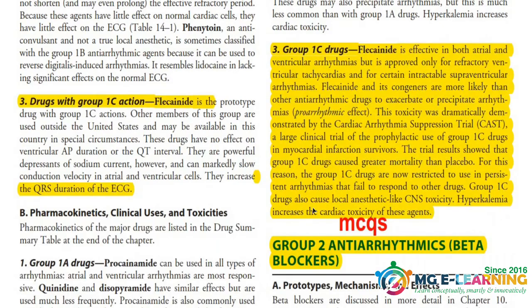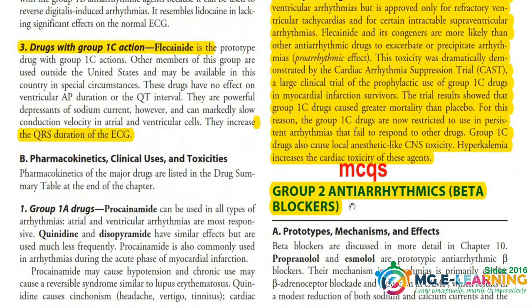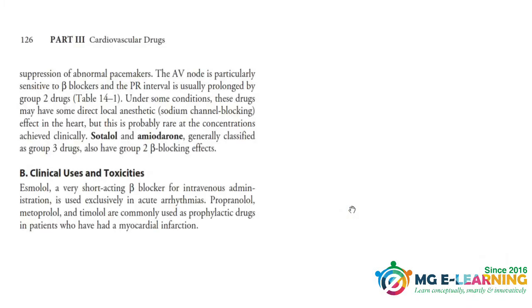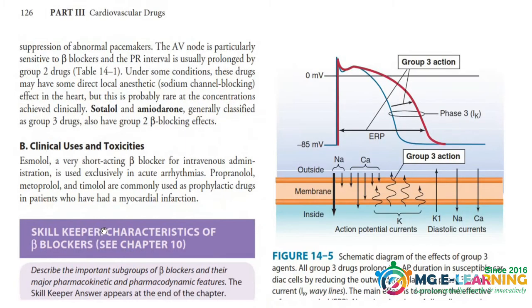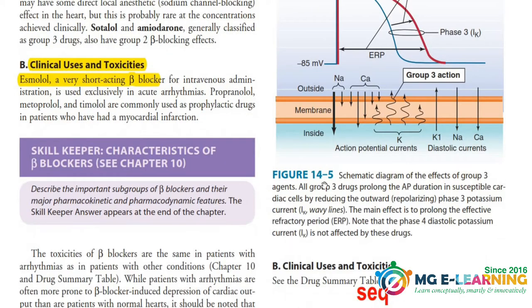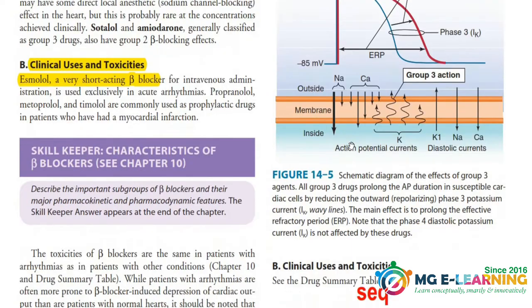Next, you have Group 2 anti-arrhythmic drugs, which are beta blockers. These are very important for MCQs; you have to study them with the table and theory. Read out all clinical uses and toxicities. Figure 14.5 is important for understanding and OSPI as well.